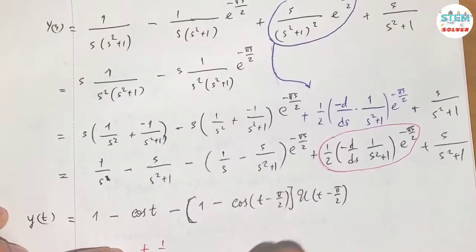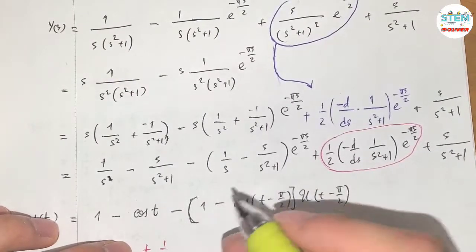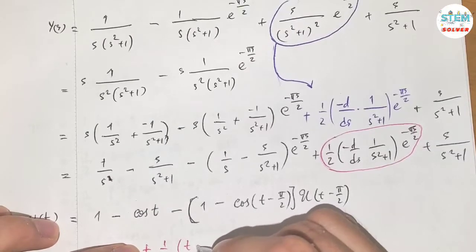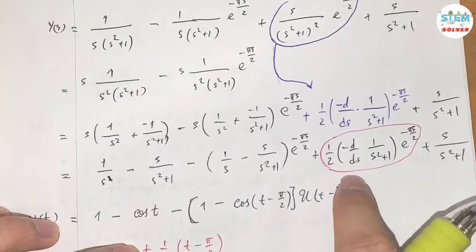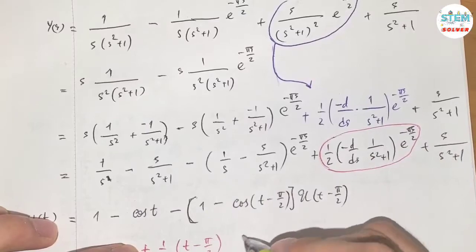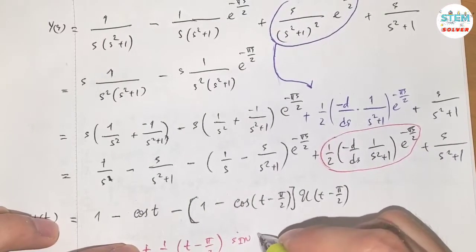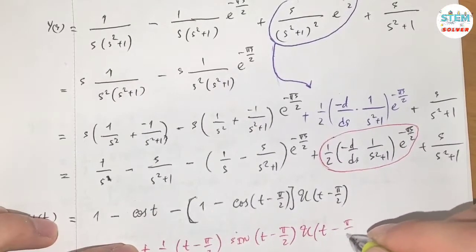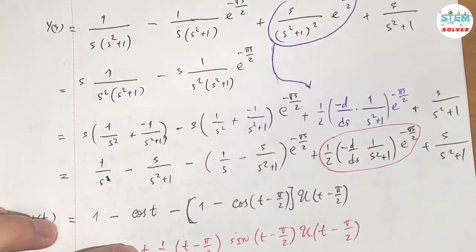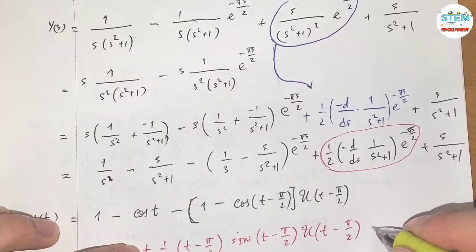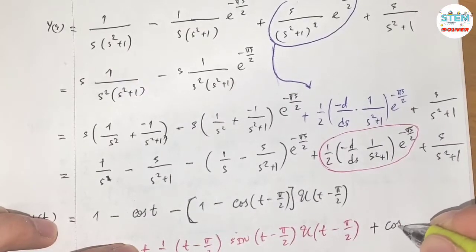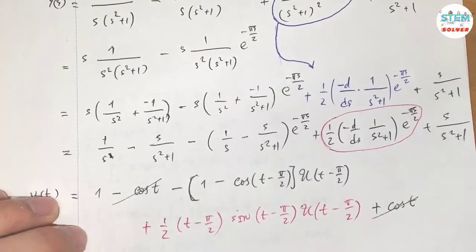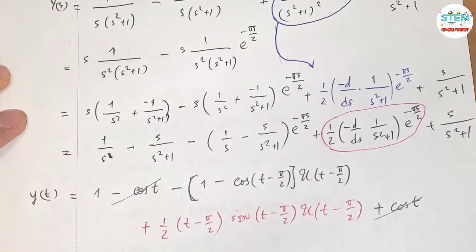Now for this one let me do it down here because I am running out of space. For that one I have one half. This gives me t minus pi over 2 because I have the root of that means I have t. This one is a sine curve, so sine of t minus pi over 2. And don't forget we have unit step function u of t minus pi over 2. And last one we have positive cosine of t. Alright, simplify a little bit. Maybe cosine, positive cosine. So this should be your final solution eventually.